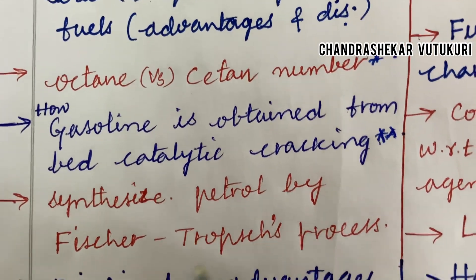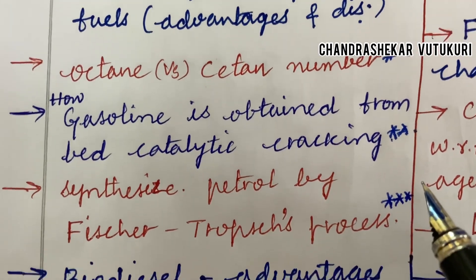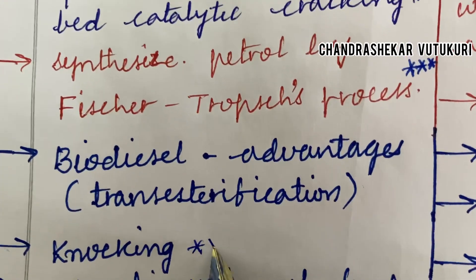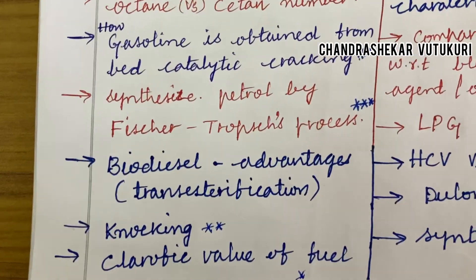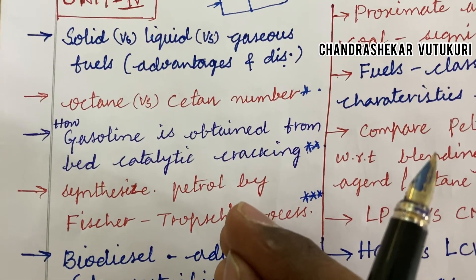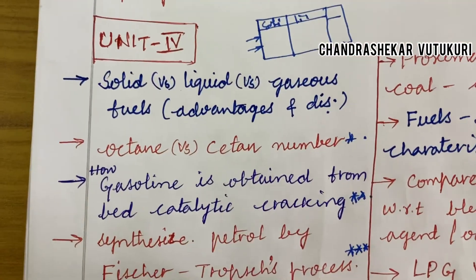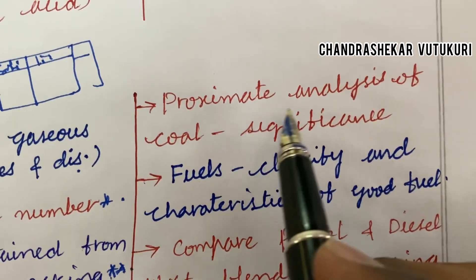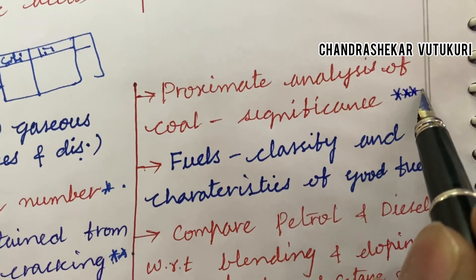Synthesizing petrol by the Fischer-Tropsch process is also one of the topmost questions, which may occur in question 3 AB. Biodiesel advantages and knocking are said to be short questions, and calorific value of a fuel is also a short question. There is no separate video for short questions — if you are thorough with all these concepts in long form, the short questions will follow. Proximate analysis of coal and its significance is said to be a topmost and commonly asked short question.